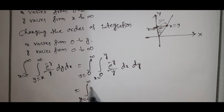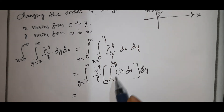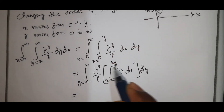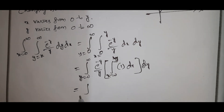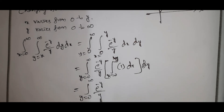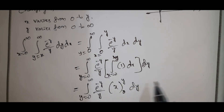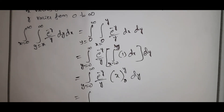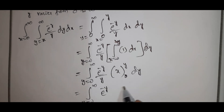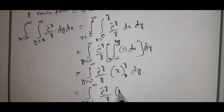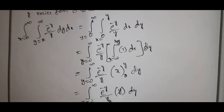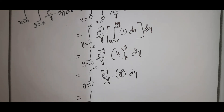Now we have: integral y from 0 to infinity, e power minus y by y. Evaluating the inner integral, we get: integral y from 0 to infinity, e power minus y by y, into y. The upper limit y minus 0 gives y, and y and y cancel. That equals integral y from 0 to infinity, e power minus y, dy.